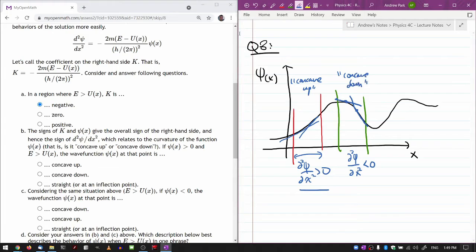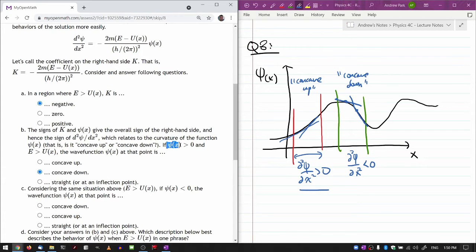So, calculus review—you would say concave down. Considering the same situation above, without thinking too much, I drew it for the situation where the wave function is positive. When the wave function is positive, there's nothing surprising here.